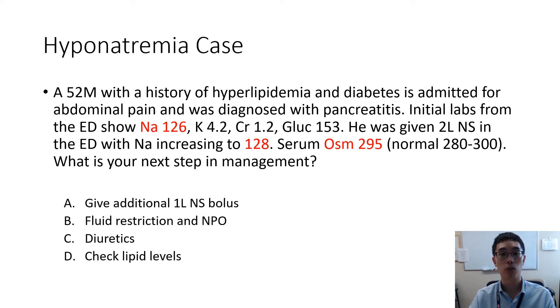Is it A, give an additional 1 liter of normal saline bolus? Is it B, fluid restriction and NPO? Is it C, give a diuretic? Or is it D, check lipid levels? Go ahead and pause the video now if you need more time to answer that question.